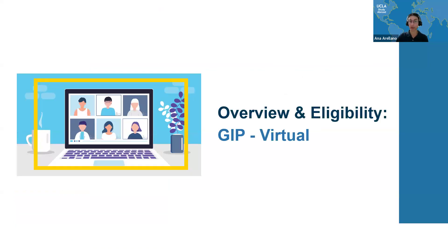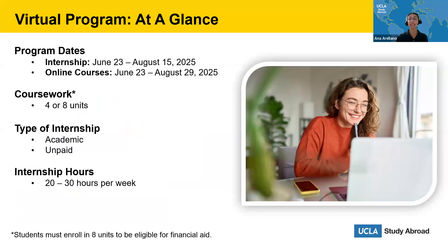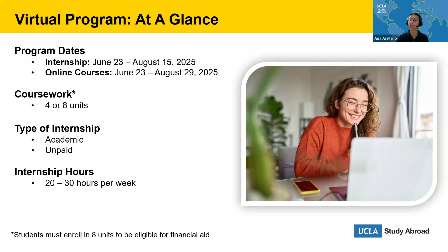So what is the Global Internship Program, specifically the virtual program? This is a 10-week program in which eight of those 10 weeks you are conducting your online virtual internship. The exact dates are June 23rd through August 15, 2025, and these dates are confirmed. Throughout the 10 weeks — June 23rd through August 29 — you are also conducting online coursework to receive course credit. Students can earn either four or eight units. All students are guaranteed four units via a mandatory internship course, with an optional additional four-unit course available. These are academic unpaid internships, and students are expected to intern 20 to 30 hours per week.